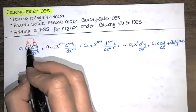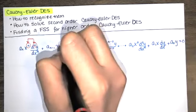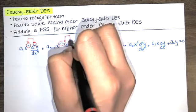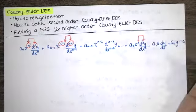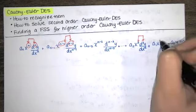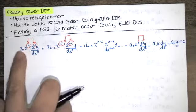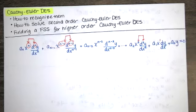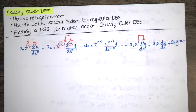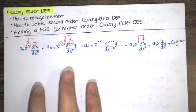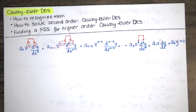What I want you to notice is that the power of x and the order of the derivative match on every term. We've got the nth power of x and the nth derivative; over here you've got x squared and a second derivative, or x to the first and a first derivative. If that pattern holds for every term, and otherwise you've just got constants out front, then that is called a Cauchy-Euler differential equation.